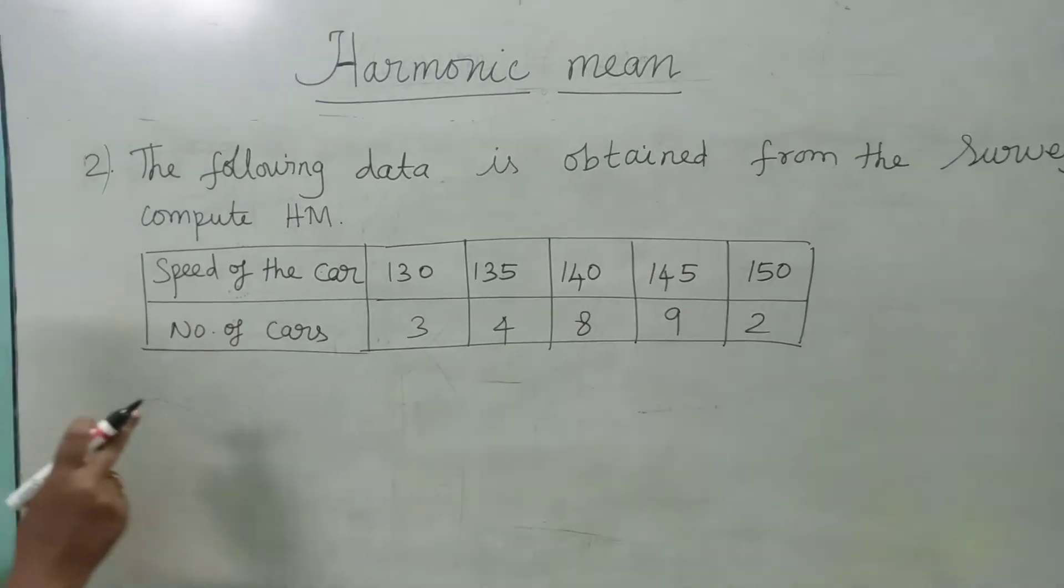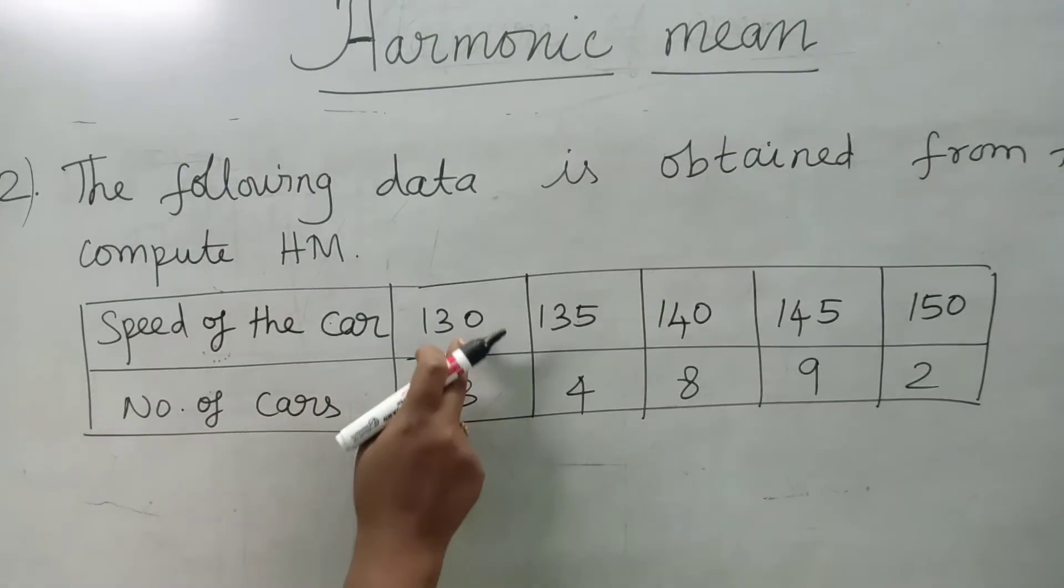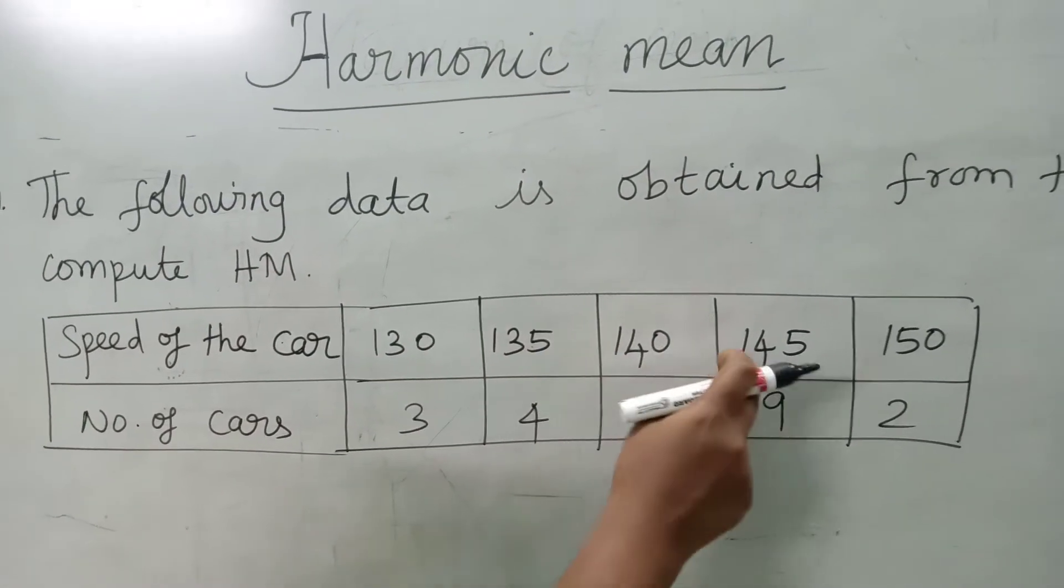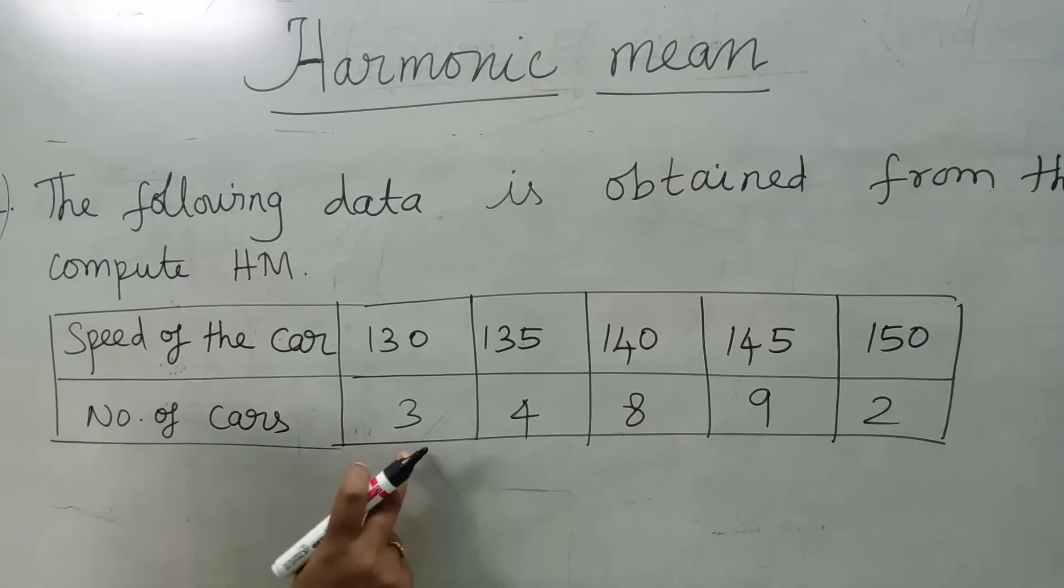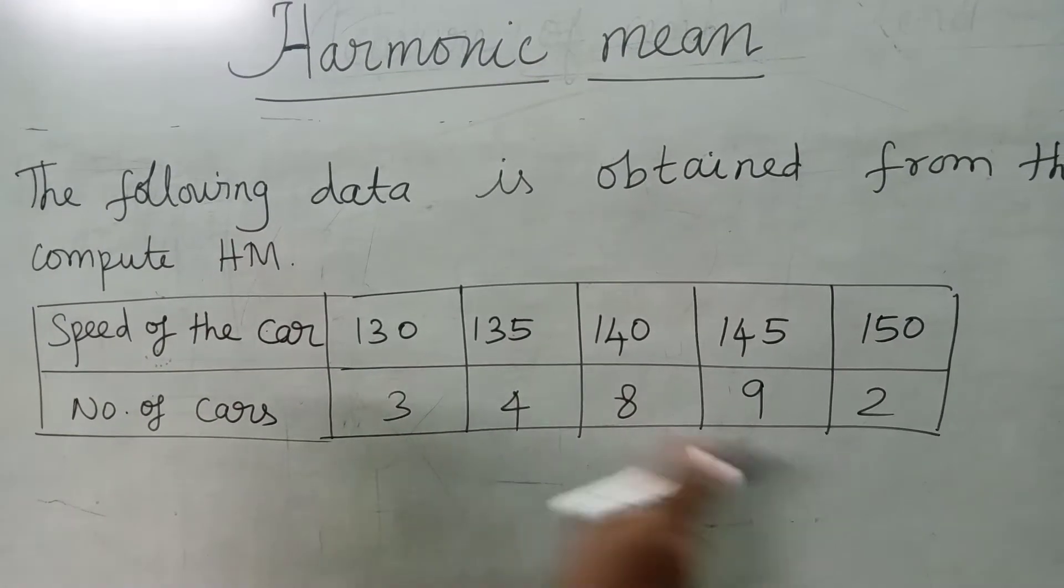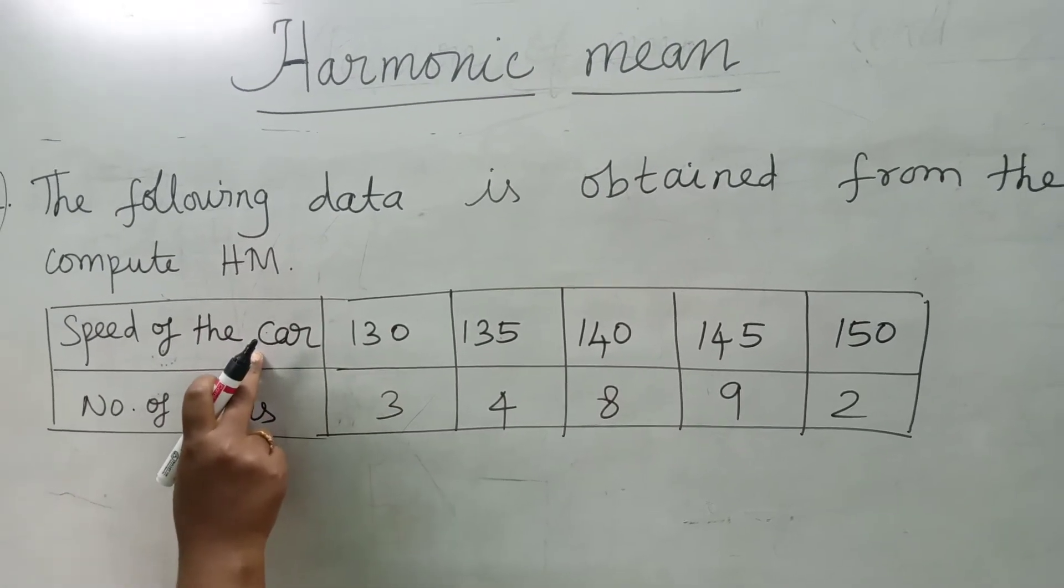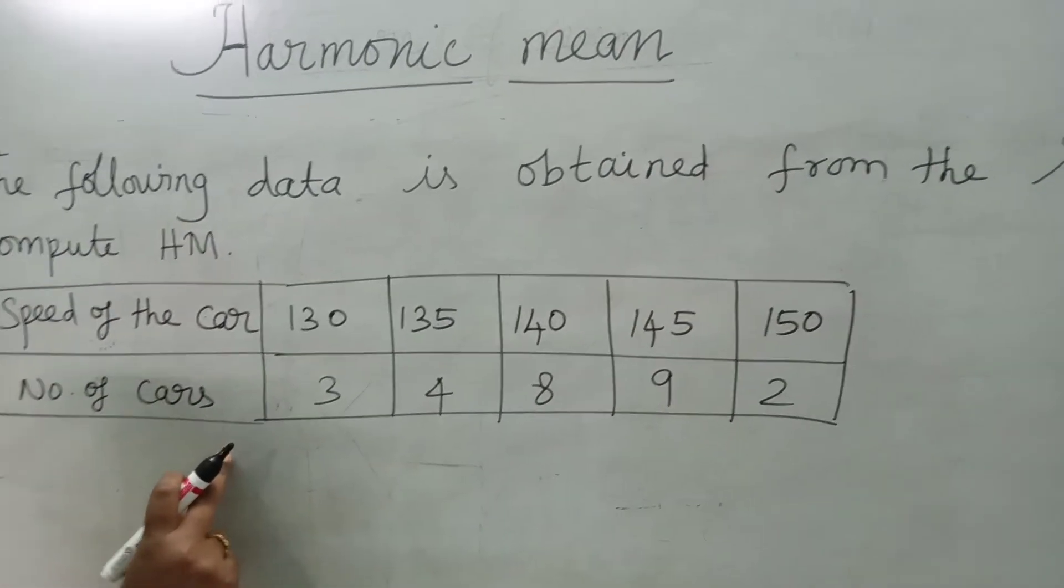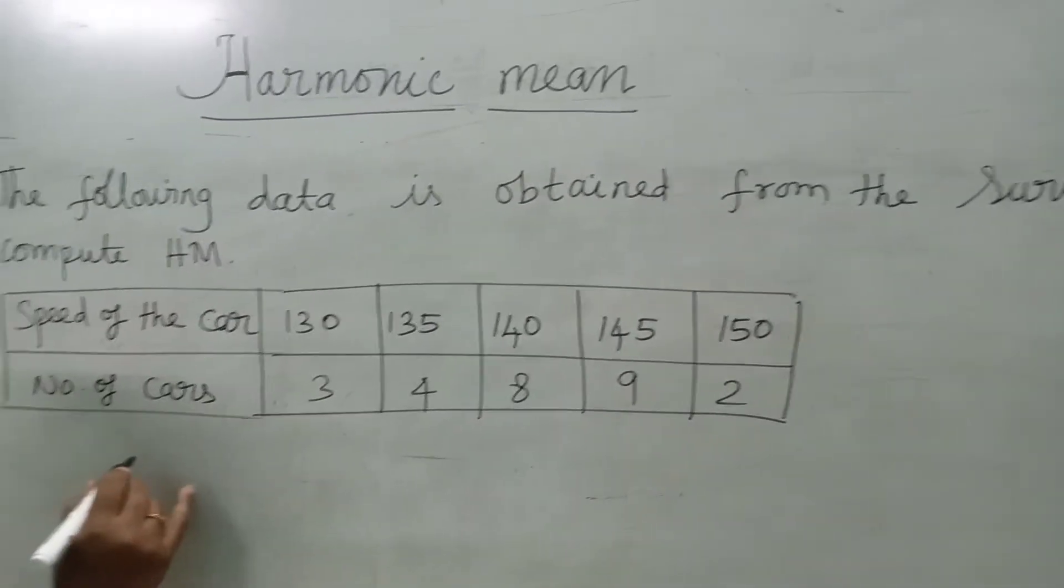This one is the example of discrete data. Speed of the car is 130, 135, 140, 145, 150. Number of cars is 3, 4, 8, 9, 2. Speed of the car we take as X value. Number of cars we take as F value. We draw the table column first.